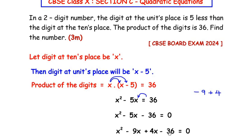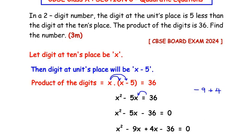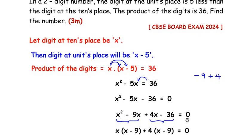So we split the middle term and write: x squared minus 9x plus 4x minus 36 equals 0. Now we group the first two terms and the last two terms. From the first group, x is a common factor, giving x(x minus 9). From the second group, 4 is a common factor, giving plus 4(x minus 9) equals 0.